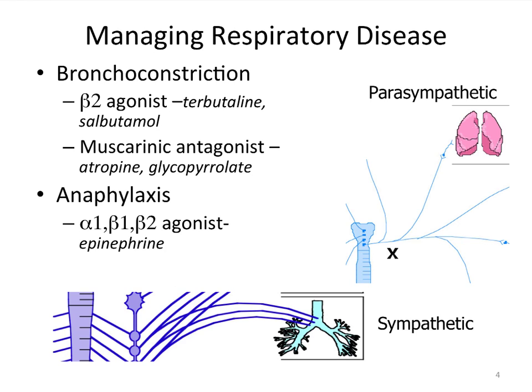Let's turn to managing respiratory disease. The condition we're treating is listed on the bullet, and the agent used to reverse that condition is underneath it. Starting with our inventory of receptors: on the parasympathetic side, we have muscarinic receptors, and on the sympathetic side, in the bronchioles, we have beta-2 receptors.